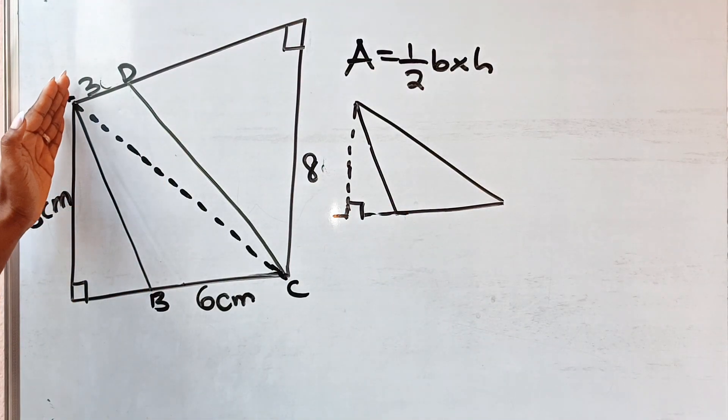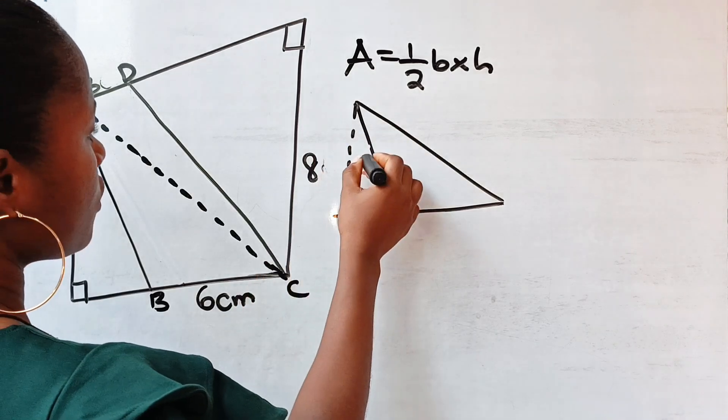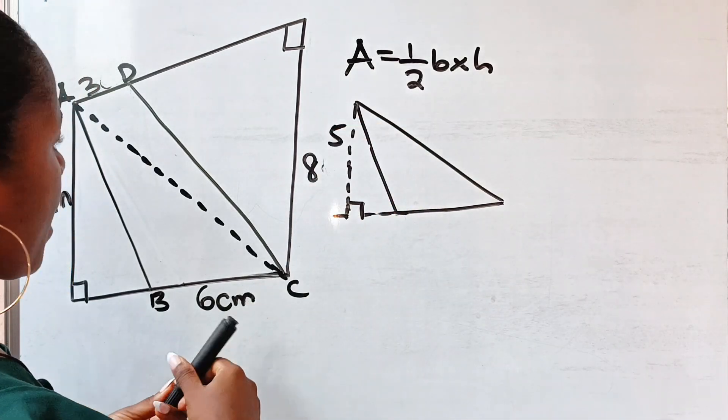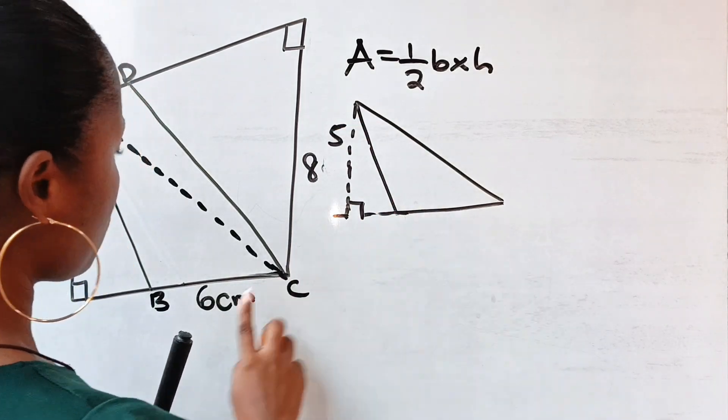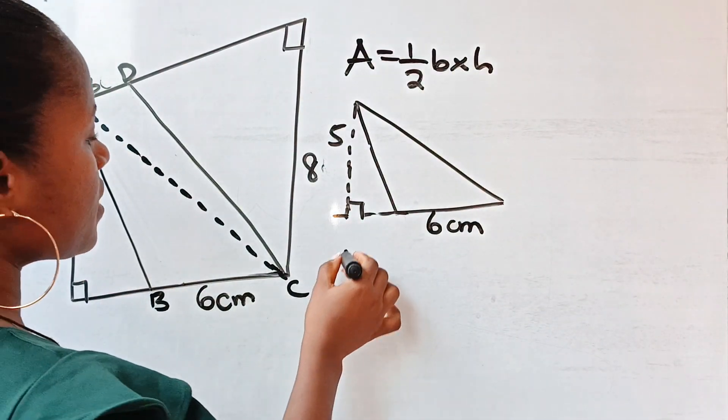And if you look at the diagram, you can see that this height is 5 cm. And the base is from here to here, which is given as 6 cm.